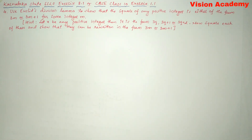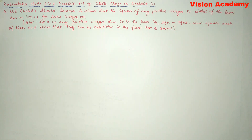Use Euclid's division lemma to show that the square of any positive integer is either of the form 3M or 3M plus 1 for some integer M. Hint: let X be any positive integer, then it is of the form 3Q, 3Q plus 1, or 3Q plus 2. Now square each of these and show that they can be rewritten in the form 3M or 3M plus 1.